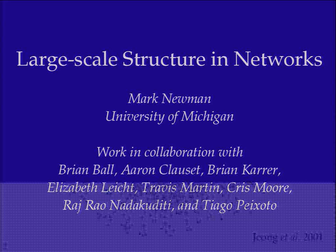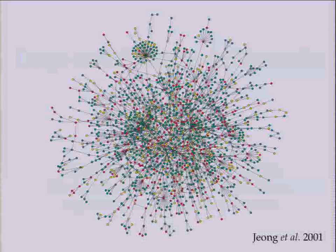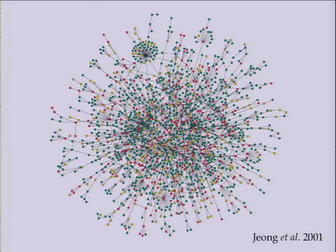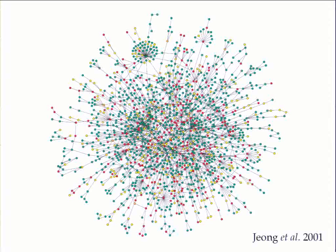When I talk about networks, I just mean a bunch of dots joined together by lines — nodes and edges. We are interested in networks because they can be used as a representation of many different systems. This picture here, for instance, is a protein interaction network. The nodes are proteins and the edges represent physical interactions between proteins — which ones form complexes with which others. There is a vast literature on individual nodes and individual edges, i.e., complexes.